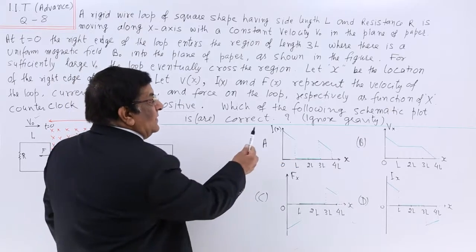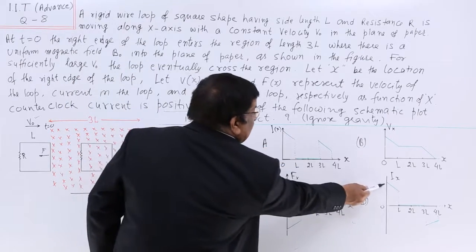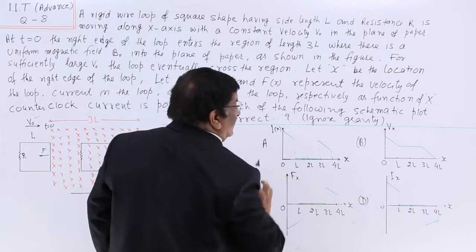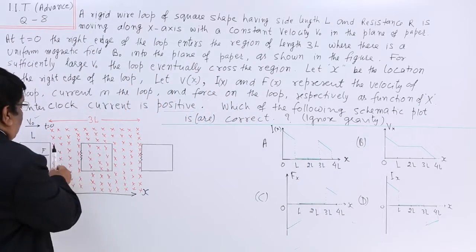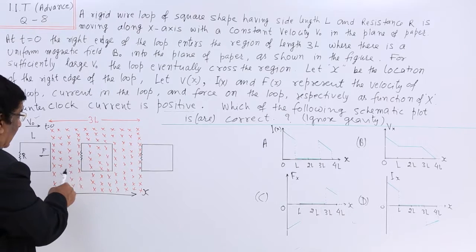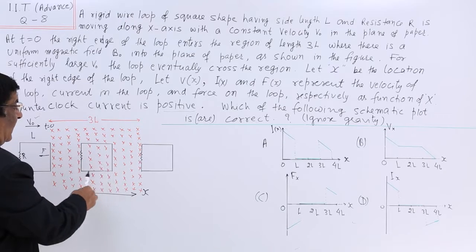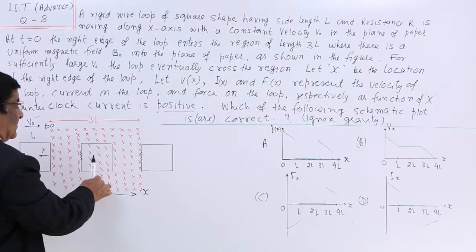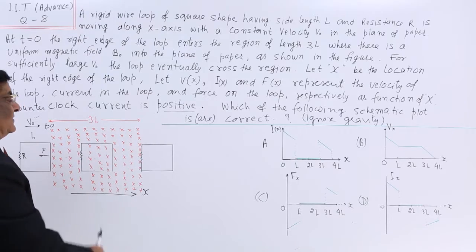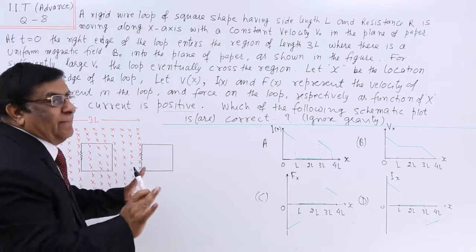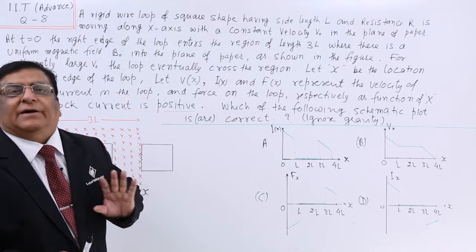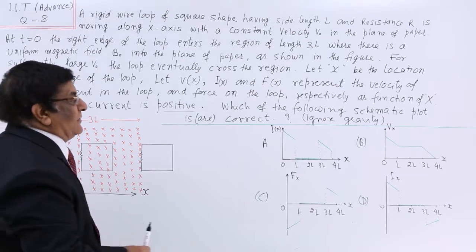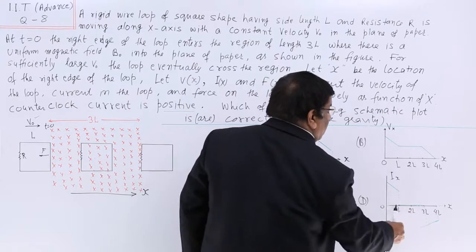So when entering, the current starts positive and goes on decreasing — both graphs show this correctly up to L. After that, when the loop is completely inside the magnetic field region, from this position to this position there is no change in flux. If there is no change in flux, no EMF is induced, no current flows, and the current remains 0. So from L to 3L the current is 0.